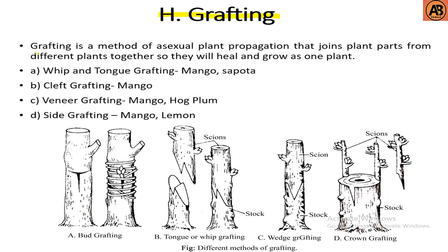Next is grafting, another type of asexual propagation. Grafting is a method of asexual plant propagation that joins plant parts from different plants together so they will heal and grow as one plant. Different types of grafting include whip and tongue grafting, cleft grafting, veneer grafting, and side grafting. Mango is a common example for grafting. Here we can see different types of grafting such as whip and tongue grafting, crown grafting, and side grafting.